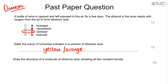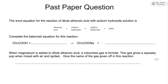For two marks, draw the structure of a molecule of ethanoic acid showing all the covalent bonds. It's extremely important to show the bonds between the O and the H. We start with the functional group showing all bonds, then have a second carbon bonded to its hydrogens. Showing every single bond in the displayed formula is required for both marks.